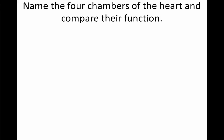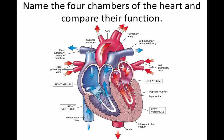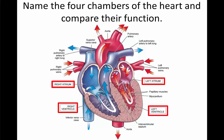Let's look at a cross section of the heart and name the four chambers of the heart and compare their function. The four chambers of the heart are the right atrium, the left atrium, the right ventricle, and the left ventricle. There's a right side to the heart and a left side to the heart, and the upper chambers are called the atria, and the lower chambers are the ventricles.